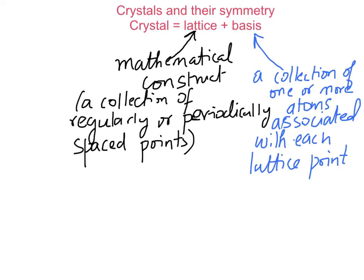So, the lattice is a mathematical construct, and the basis is a collection of one or more atoms associated with each lattice point. Together, the lattice and the basis define the crystal.